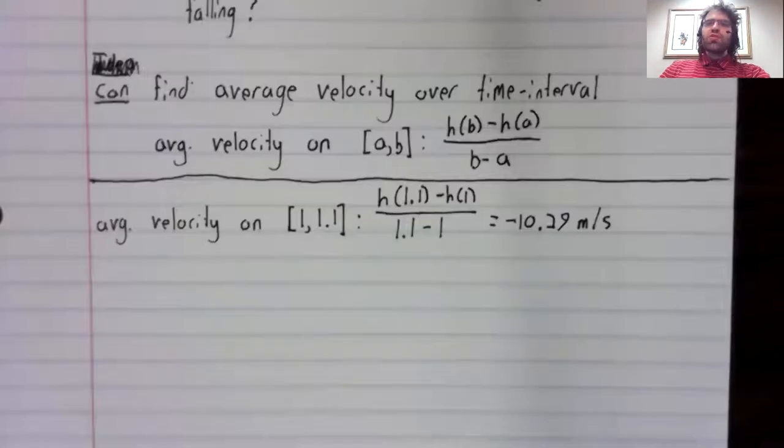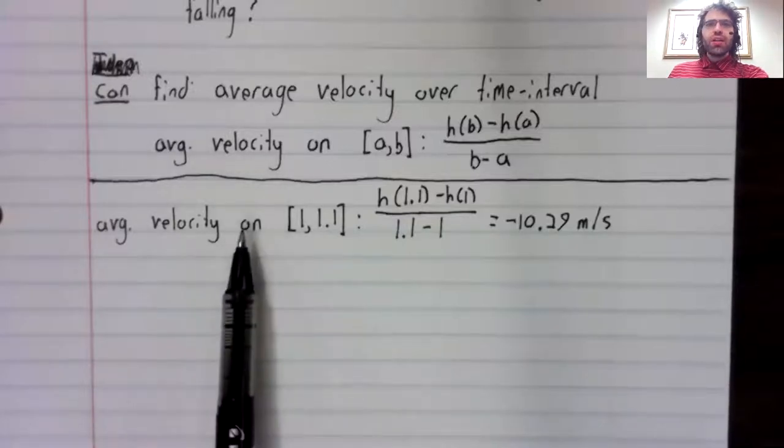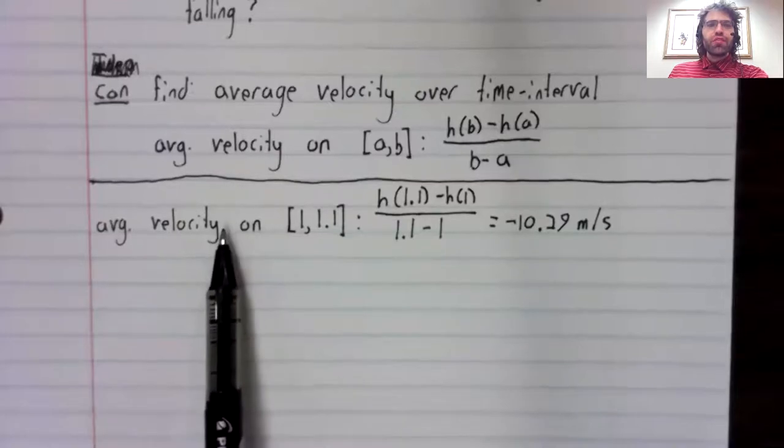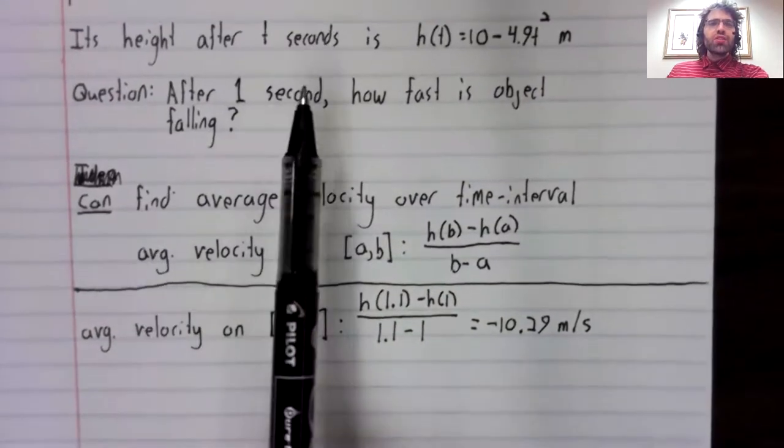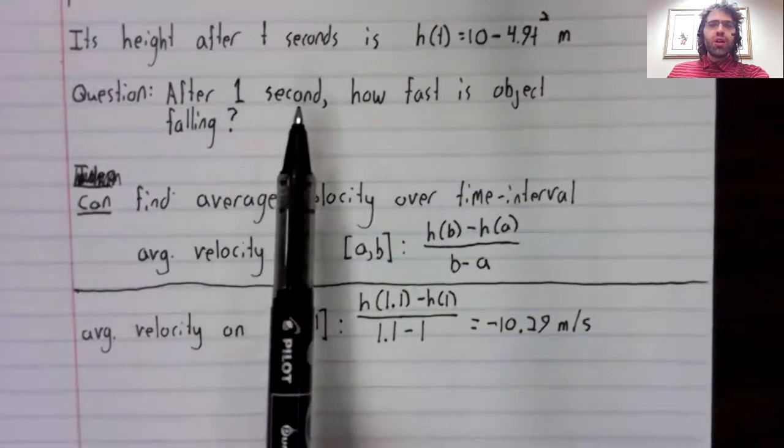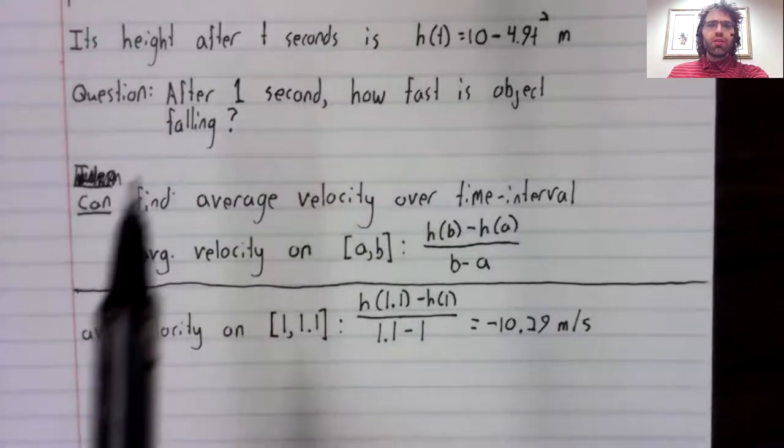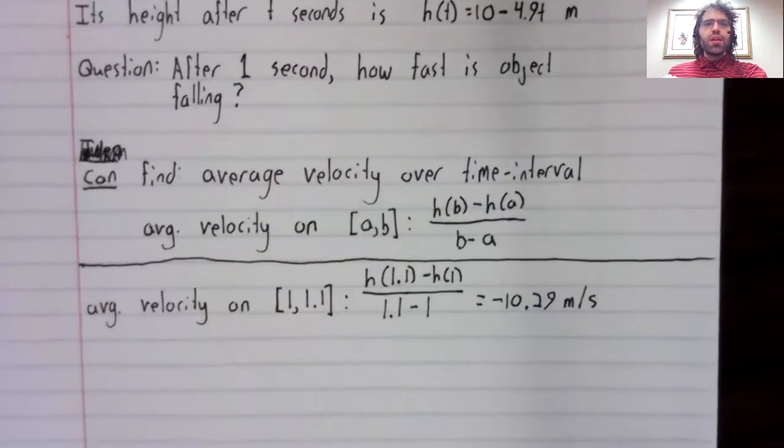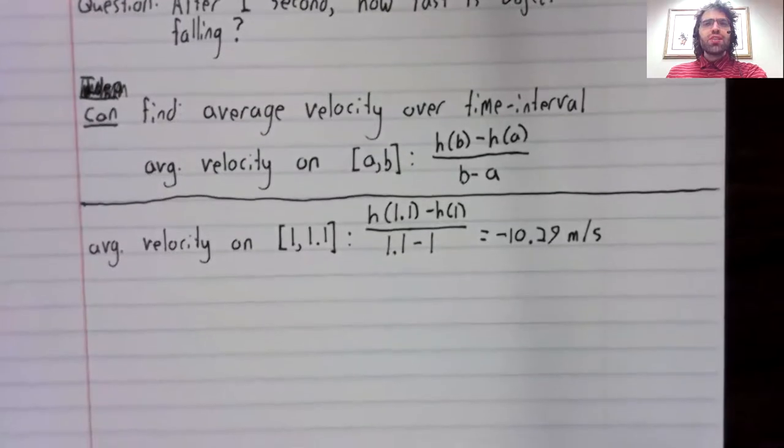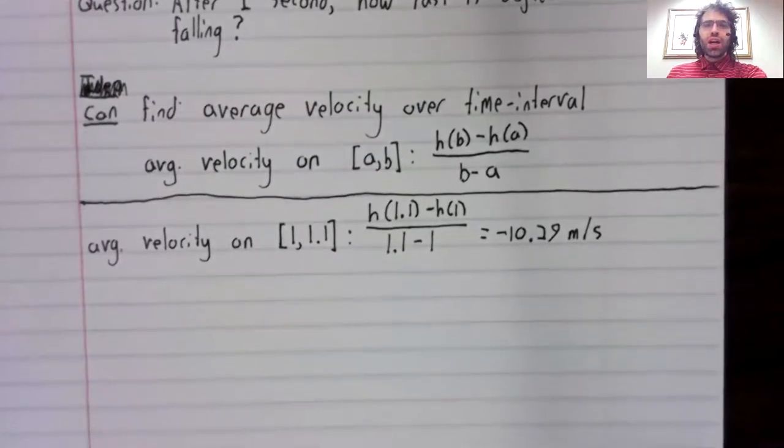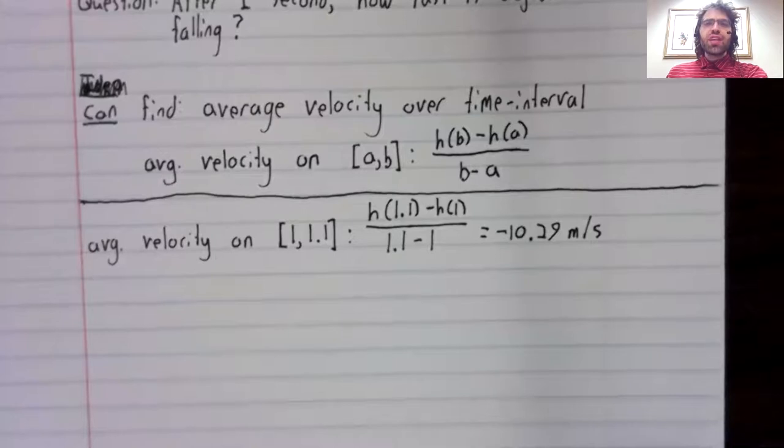What's our rationale for this approximation? That is to say, why do we think that this average velocity might approximate the velocity we're looking for? The answer to that is that acceleration takes time. This object is accelerating at a constant 9.8 meters per second squared.